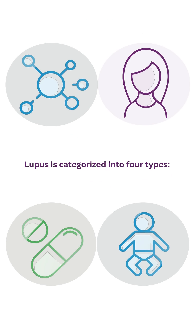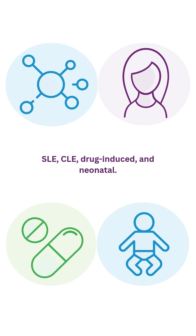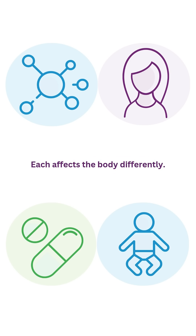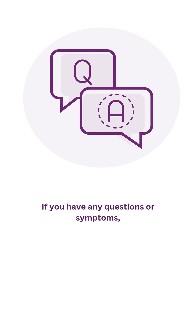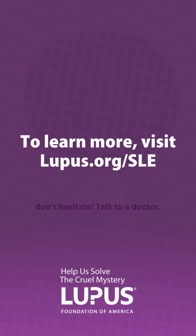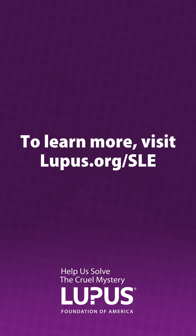Lupus is categorized into four types: SLE, CLE, drug-induced, and neonatal. Each affects the body differently. If you have any questions or symptoms, don't hesitate — talk to a doctor. To learn more, visit lupus.org/SLE.